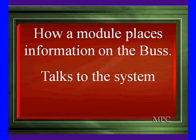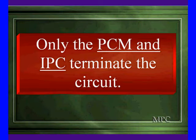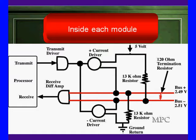How a module places information on the bus is a little bit different than anything else. It's going to give you a good preview of how CAN is going to work. Only the PCM and IPC terminate the circuit. Remember, we're going to terminate it with resistors. Down there at the black arrow is a 120-ohm resistor across the output. Two modules have this. Again, remember, IPC and the PCM.